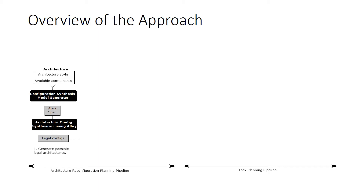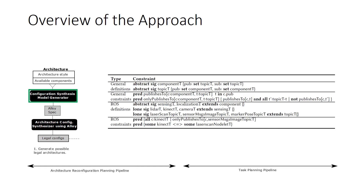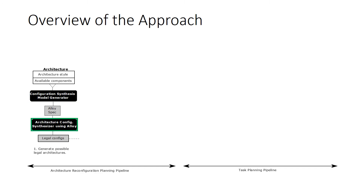The first stage in the architecture reconfiguration pipeline generates the set of legal architectures available in the current execution context. The configuration synthesis model generator receives as input the set of currently available components — obtained via the MAPE-K monitoring infrastructure — as well as the formal description of the architectural style. With those elements, it encodes an Alloy specification, which is then used as input to the architecture synthesizer component to instantiate legal architectural configurations.